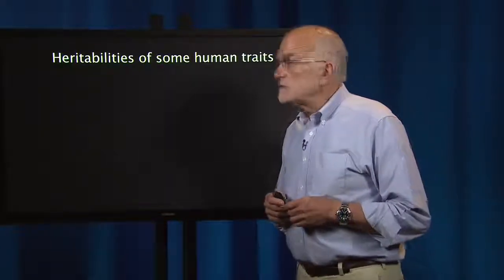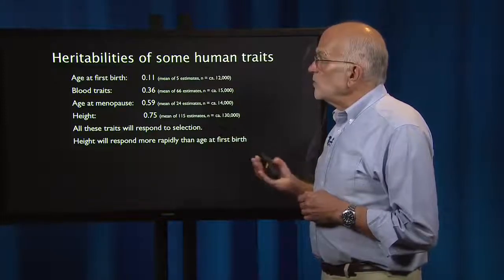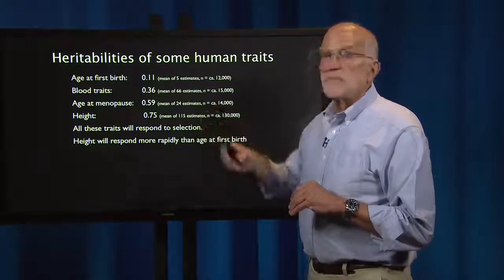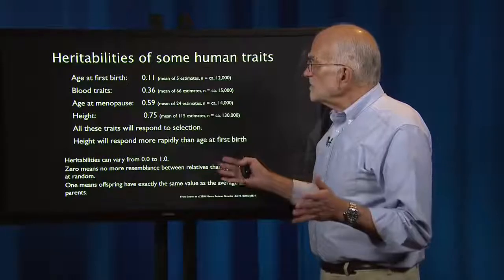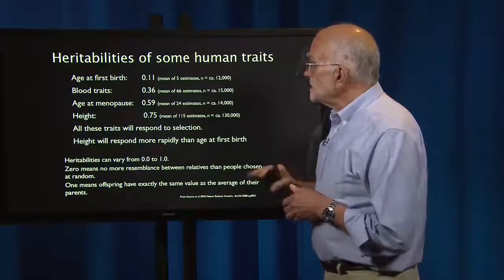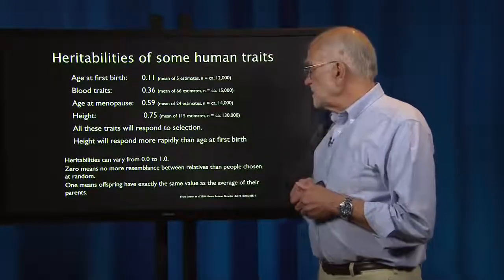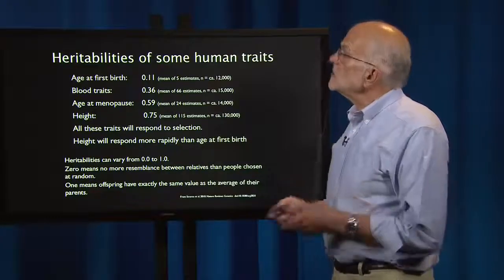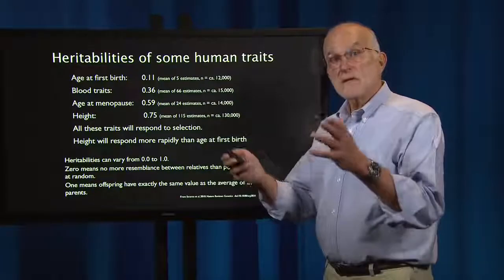Here are the heritabilities of some human traits. Age at first birth: 0.11. Blood traits like cholesterol: around 0.3 to 0.4. Age at menopause: about 0.6. Height: about 0.75. All of these traits are capable of responding to selection, but height will respond more rapidly than age at first birth because its heritability is higher. Heritabilities range from 0 to 1. Zero means no more resemblance between relatives than between people chosen at random. One means offspring have exactly the same value as the average of their parents. Human traits have significant genetic variation and can respond to selection.